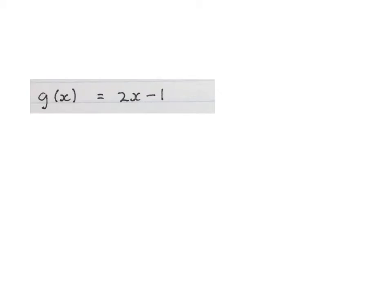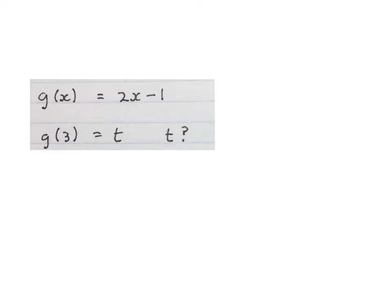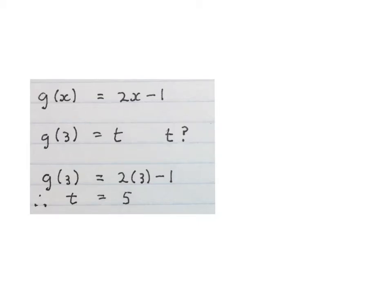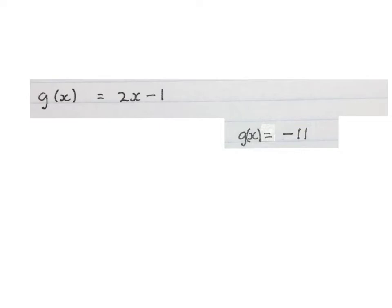Now let's look at a few questions. They give us the function G of X equals 2X minus 1, and tell us that G of 3 equals T, asking us to work out T. We replace X with 3 and simplify: that gives us 5. Therefore T is equal to 5. First work out G of 3, get the answer, and equate it to T.